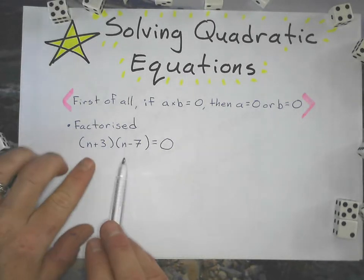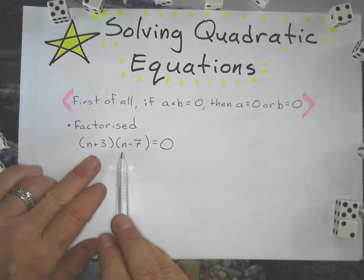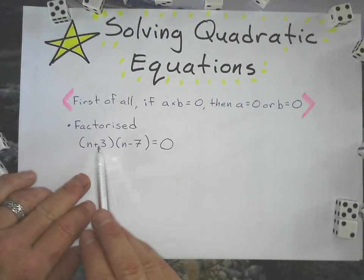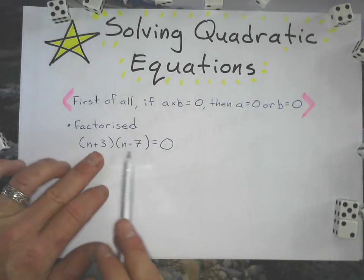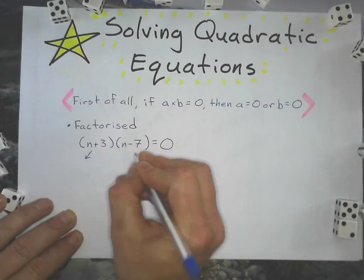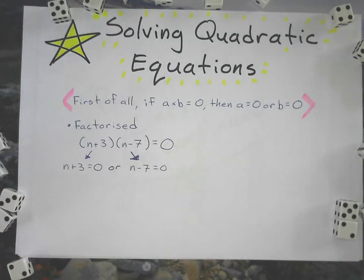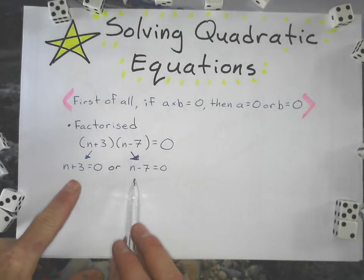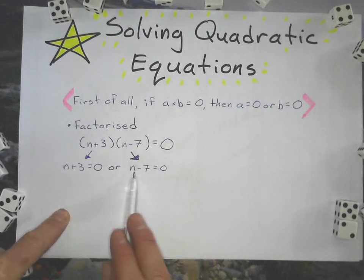Because of this rule right here, I would set both of these factors equal to zero. Because if these two multiplied equal zero, one of these has to be zero. So what I have now is basically solving two linear equations: n plus 3 equals zero, or n minus 7 equals zero.